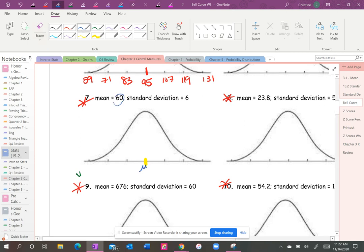In this case it is 60, the standard deviation is 6, so you would just keep going up by sixes and then down by sixes.